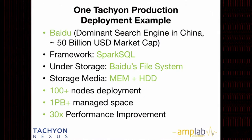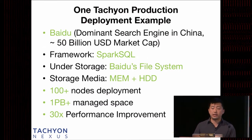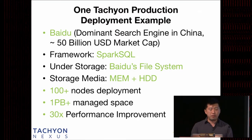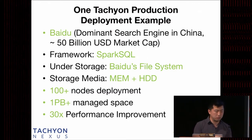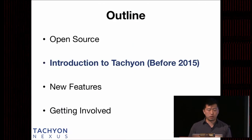Here's one example of a production deployment. Baidu is deploying Tachyon in production — they run Spark SQL on top of Tachyon, and under Tachyon they run the Baidu File System. They use Tachyon's tiered storage feature to manage both memory and HDD. The deployment is around 200 nodes, managing petabytes of space under Tachyon management, and it brings about 30 times performance improvement for Baidu's workload.